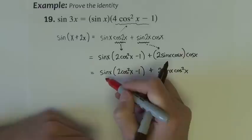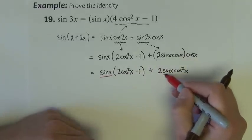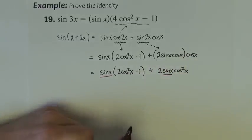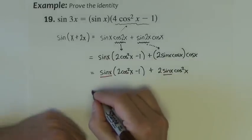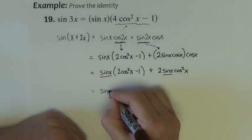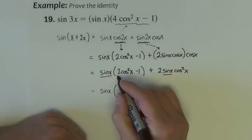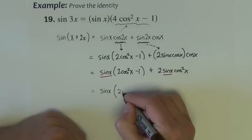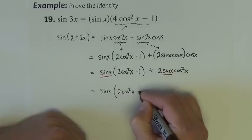If you notice like I notice, there is a sine that is in common to both of these terms. If I factor that sine out, I leave behind 2 cosine squared x minus 1, plus 2 cosine squared x.